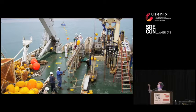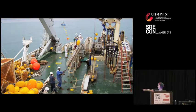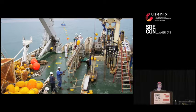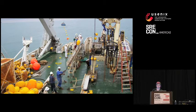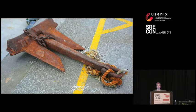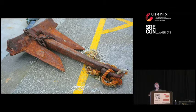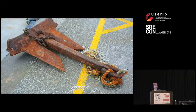Undersea cable is actually laid down by boats — this is a fiber laying boat. They have these huge spools and they slowly go across the ocean, spooling out incredibly long fiber runs. They're super large and super awesome. Of course, there are natural predators for undersea fiber as well. The biggest one are boats — boat anchors can easily snag and drag and break these fibers. It has happened a lot.